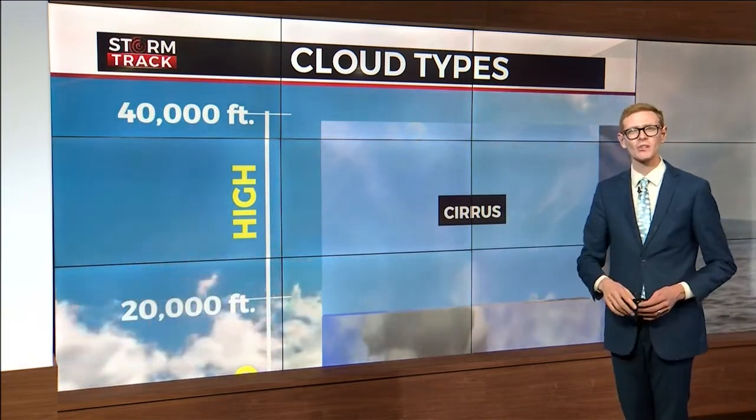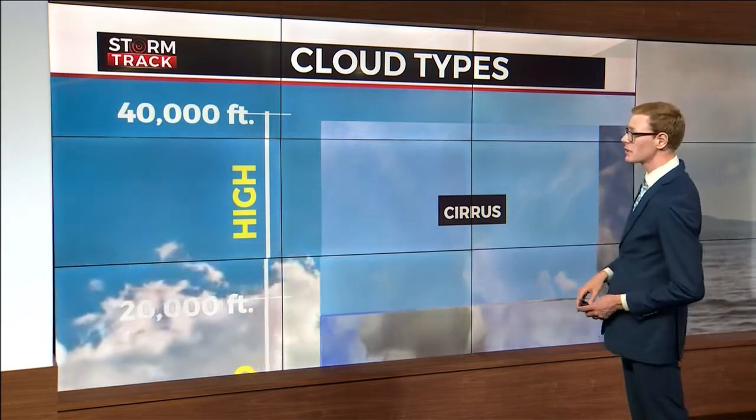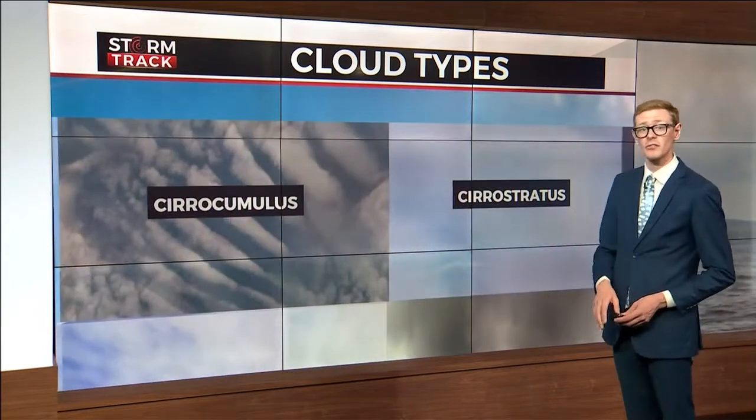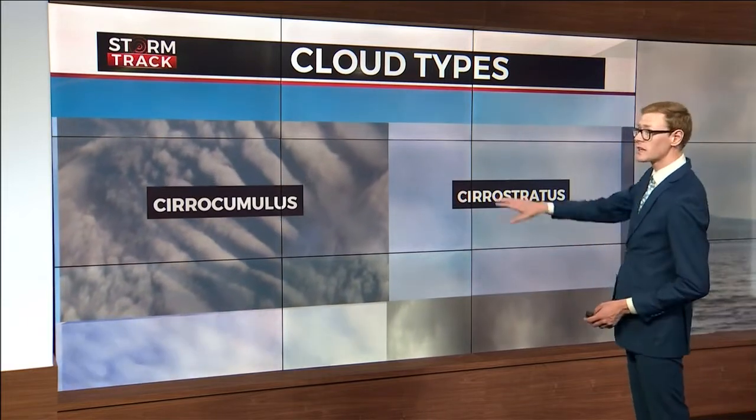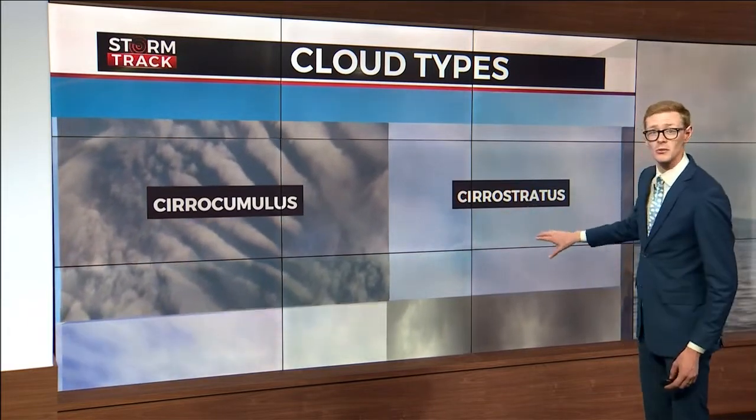High clouds are above 20,000 feet. Clouds at this level are made up of ice crystals, so they aren't as large or dark as clouds at lower levels. Cirrus clouds are thin and wispy. The prefix cirro is used for all clouds at this level — cirrocumulus and cirrostratus.